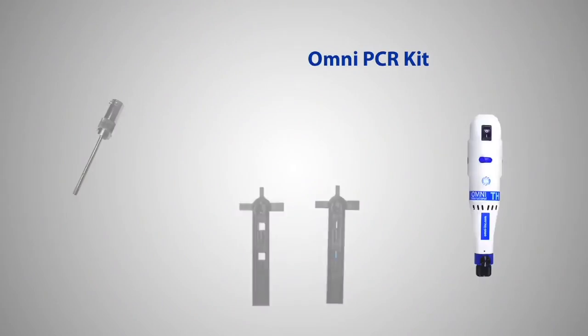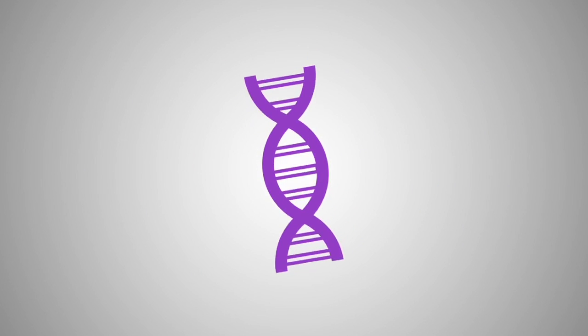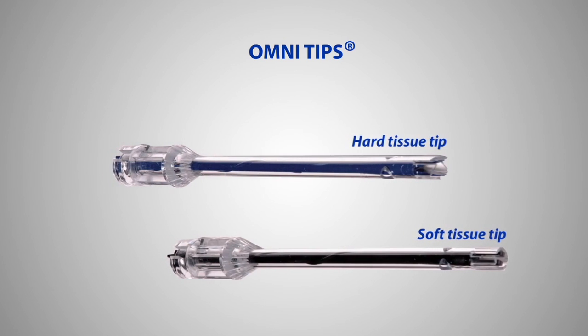The Omni PCR kit with disposable generator probes is ideal for PCR and extracting nucleic acids. Omni-tip generator probes are disposable and completely eliminate the risk of cross-contamination.